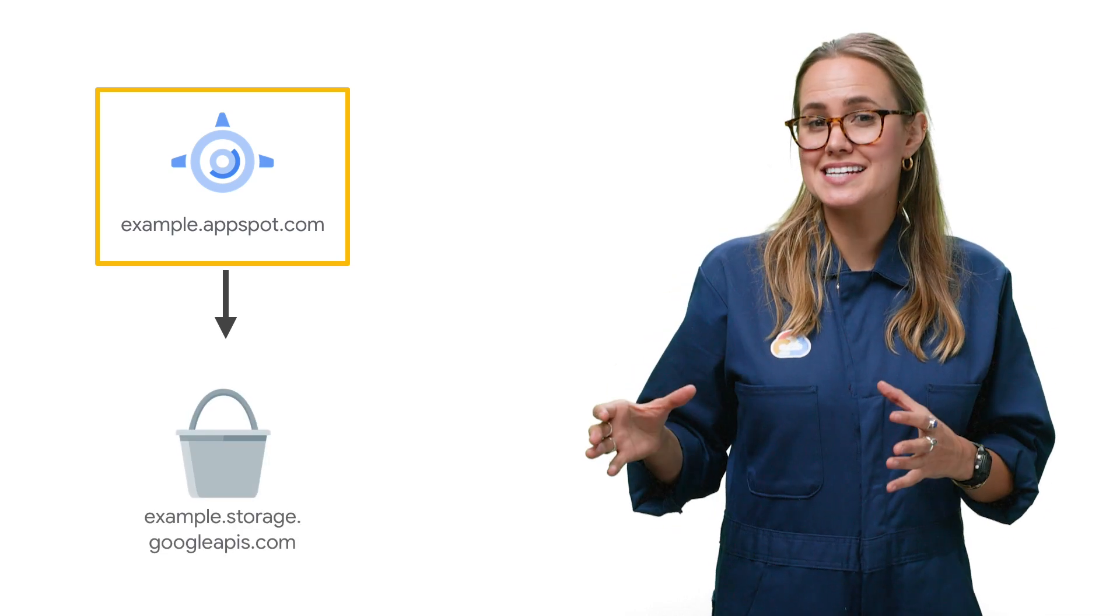For example, a script on a page hosted on App Engine at example.appspot.com might need to use resources stored in a Cloud Storage bucket at example.storage.googleapis.com. These are two different origins from the perspective of the browser.